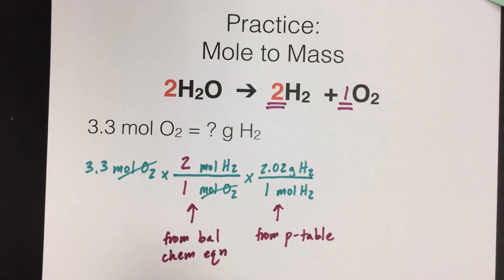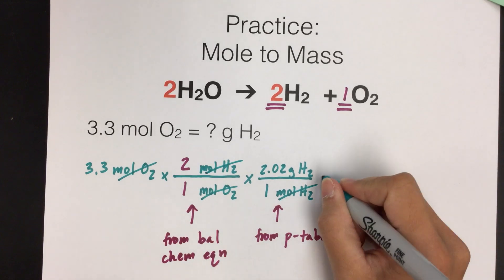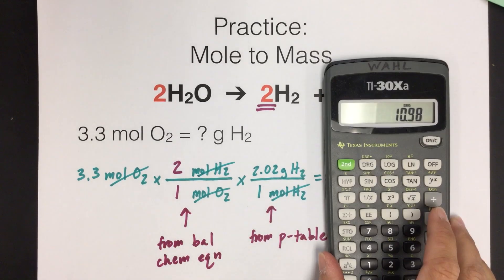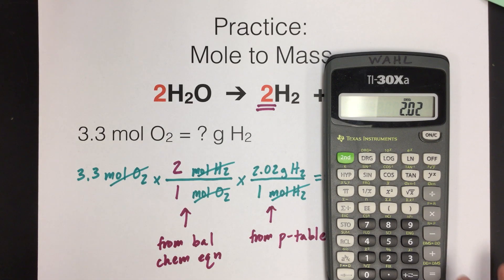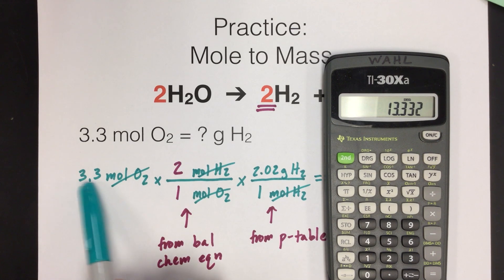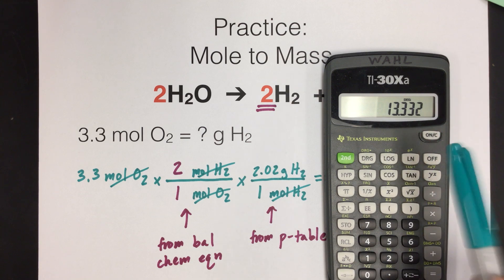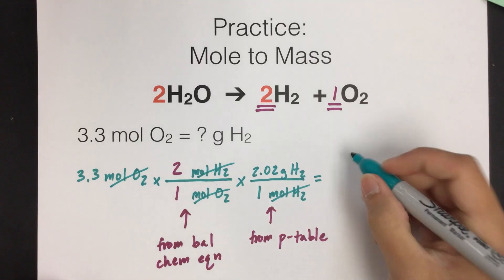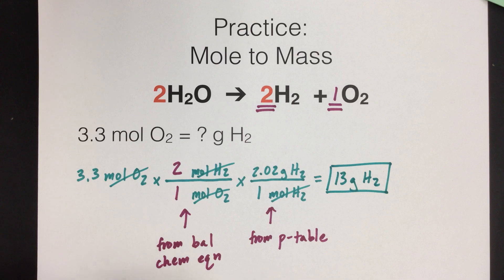Our moles of H2 cancel and we're left with grams of H2, which is what we wanted. Our setup is done, so we calculate: 3.3 times 2 times 2.02. The ones in the bottom don't affect the answer. Our sig fig rules tell us to match the number of sig figs to what was given — two sig figs. The calculator gives 13.332; we cut off after two sig figs. It's followed by a 3, which is less than 5, so our answer is 13 grams of H2. That is our answer for this mole-to-mass problem.